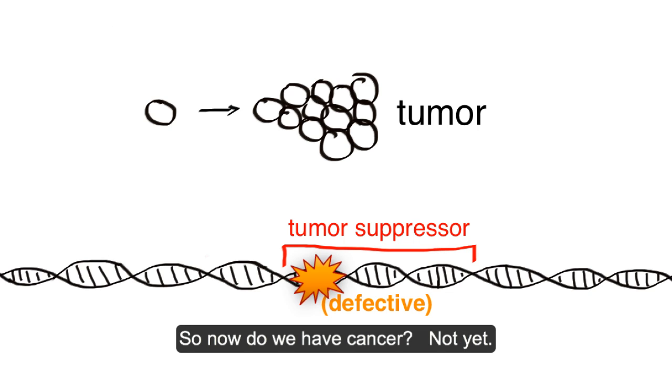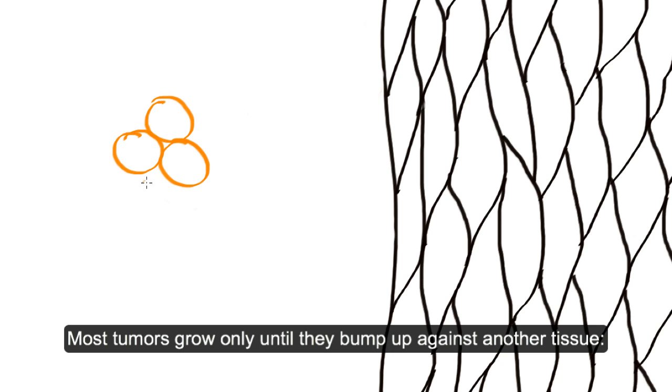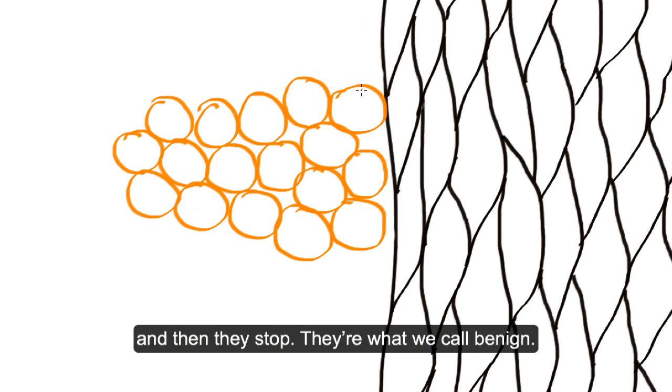So now do we have cancer? Not yet. Most tumors grow only until they bump up against another tissue, and then they stop. They're what we call benign.